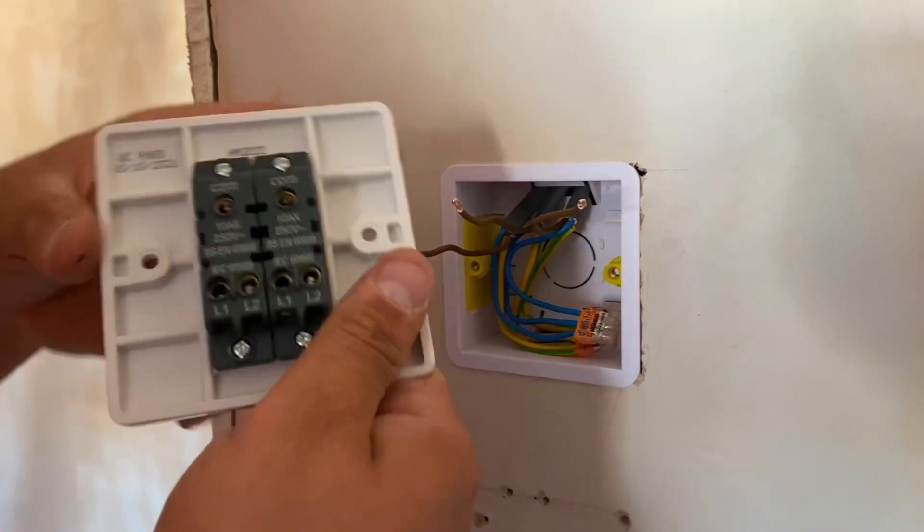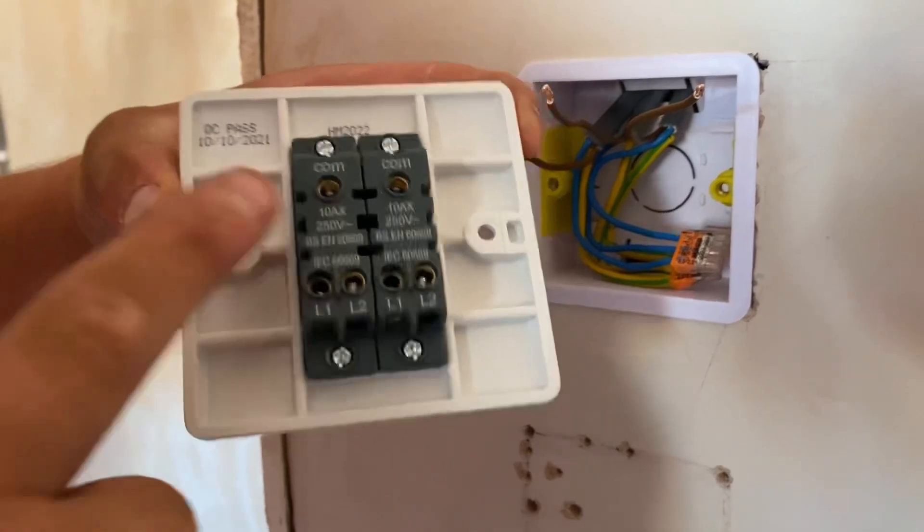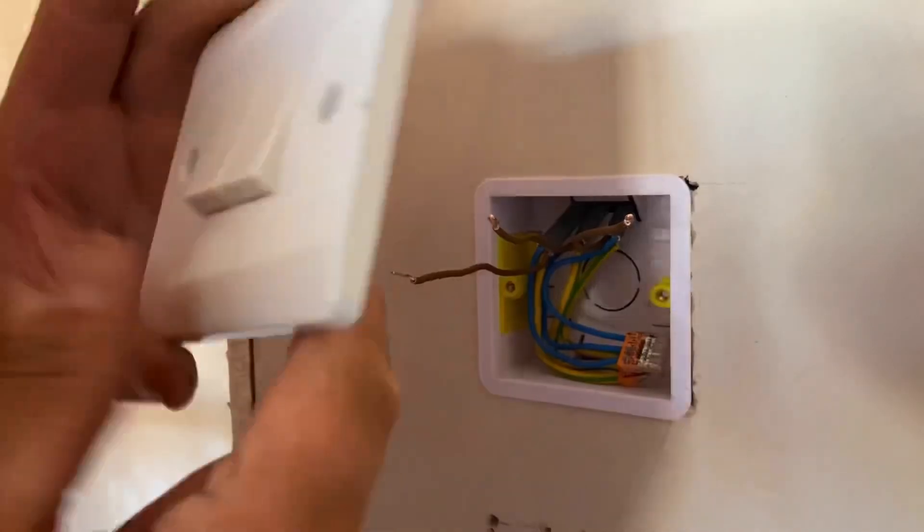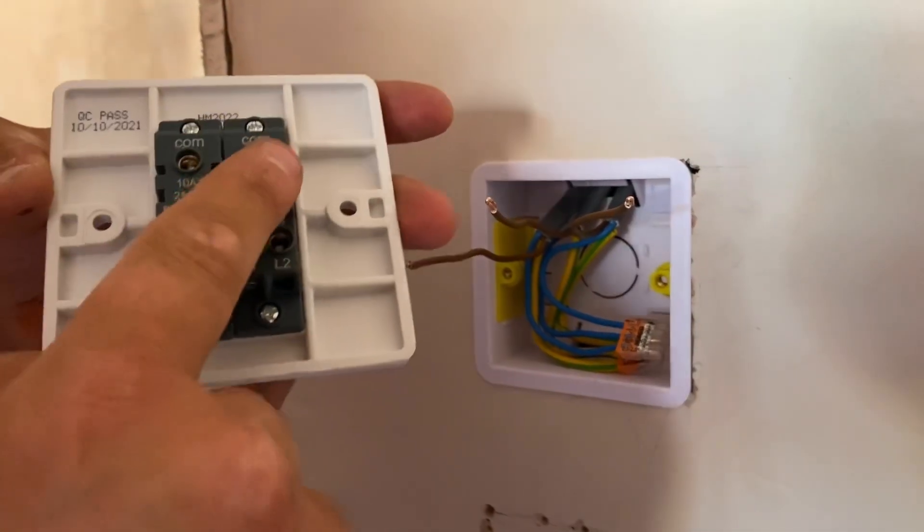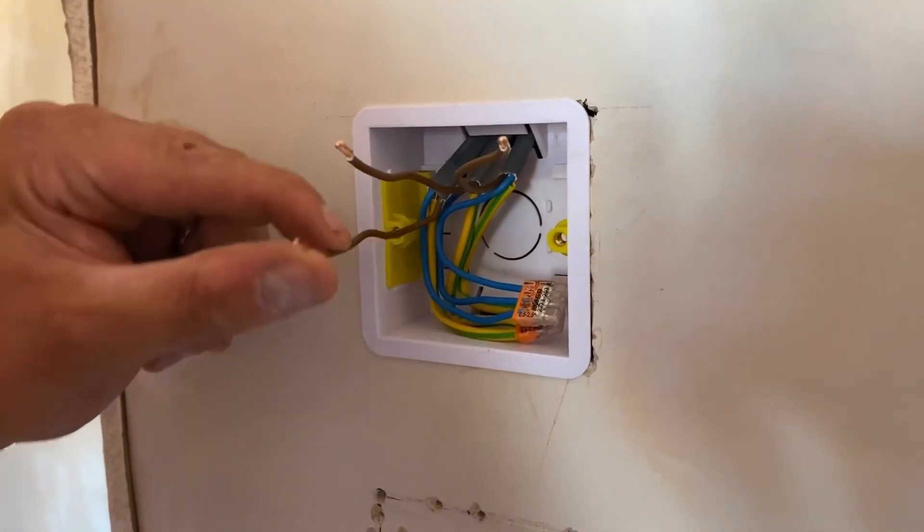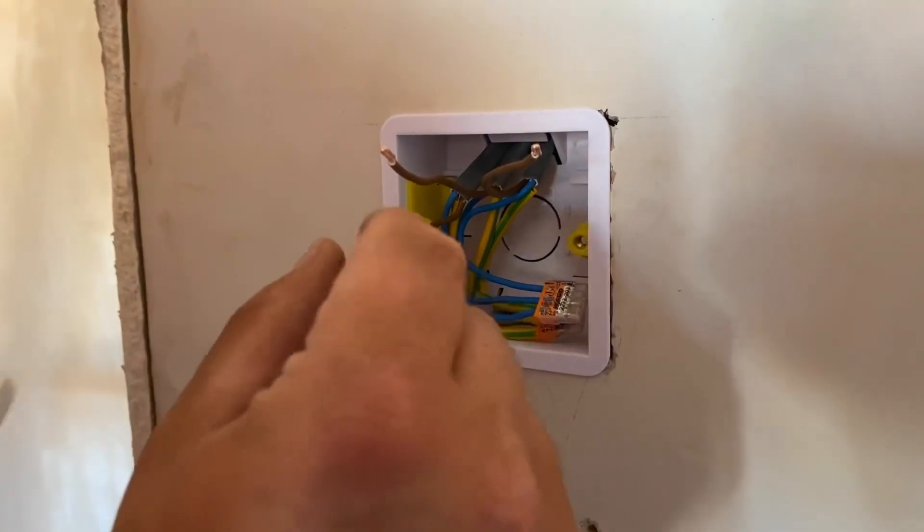But because this is being switched for two separate lights, what we actually need to do is we need to bridge our connection across here. Now what we could do is we could take this into a Wago as well, and then this one here into a Wago.